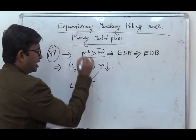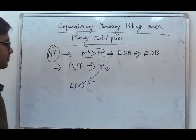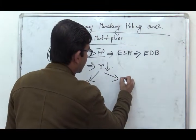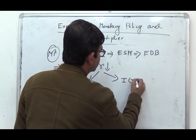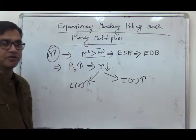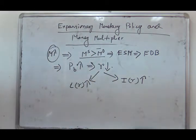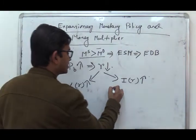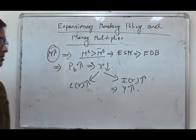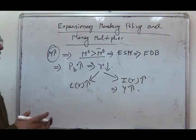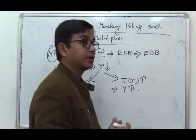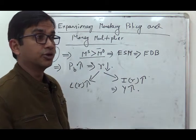The fall in interest rate has two impacts. First, the demand for idle cash or liquidity will increase. On the other hand, it will boost private investment. A boost in private investment means aggregate demand will also increase. This process will continue until money market equilibrium is restored.